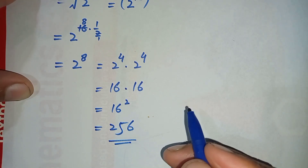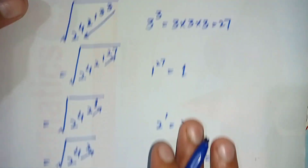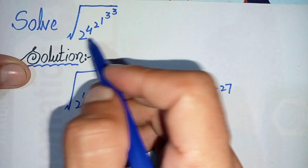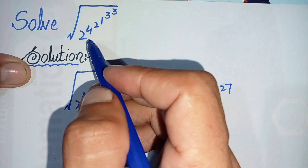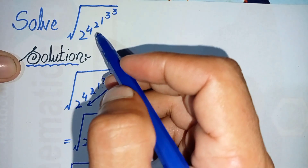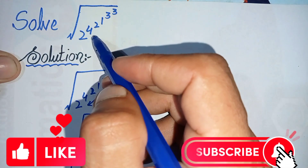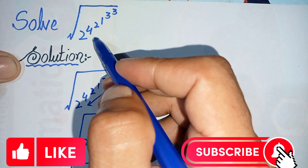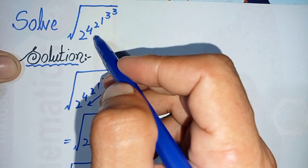So 256 is the answer and solution of this nice and interesting square root math problem. Don't forget to subscribe to our YouTube channel for such interesting videos. Thank you so much for watching.